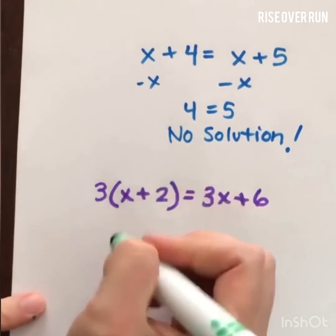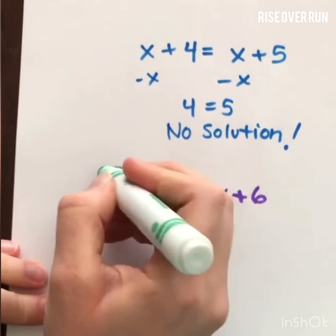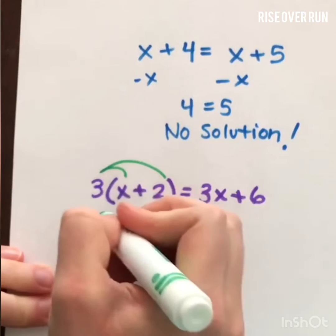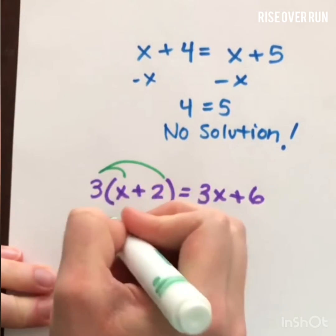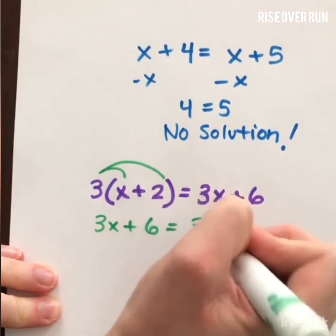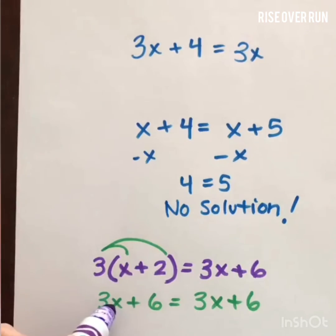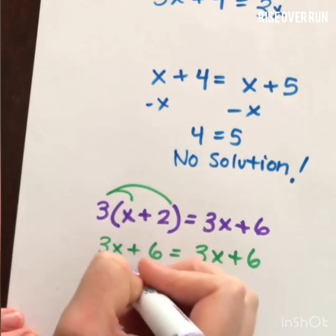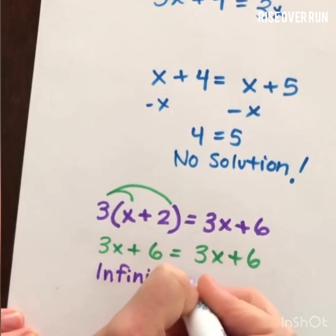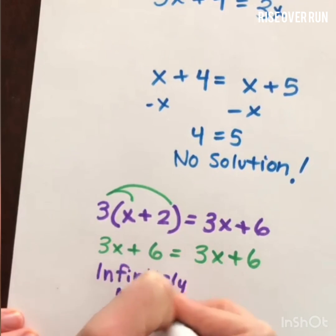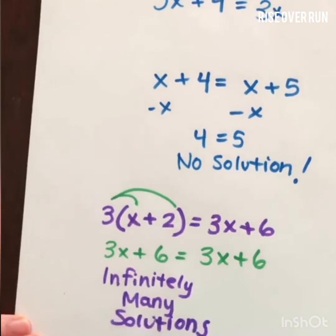What if you have something like this? First, we could distribute by multiplying everything inside the parentheses by that 3. And then you might notice both of these are the exact same thing, meaning it doesn't matter what I plug in for x, it's going to be equal no matter what. So because I can plug in any number I want for x, we call that infinitely many solutions. So that's a quick review of all kinds of things with equations.